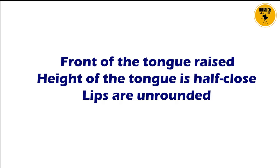For cardinal vowel number 2, the front of the tongue is raised, the height of the tongue is half close, and the lips are unrounded. Example words are 'bet', 'met', 'let'. Concentrate on the sound of the letter 'E' in these three words.